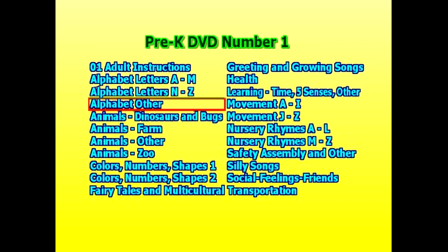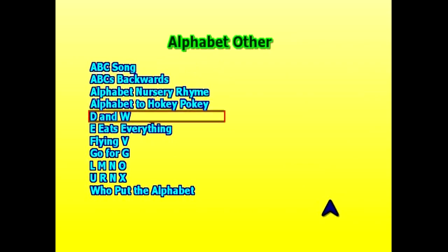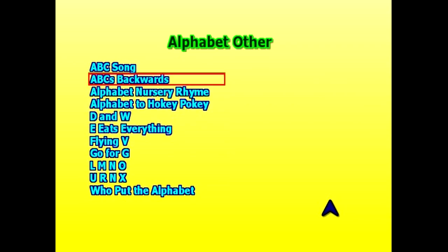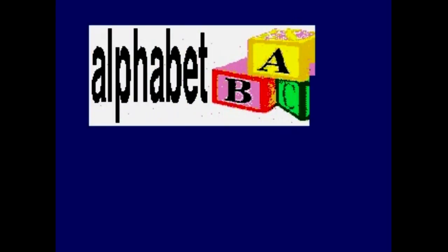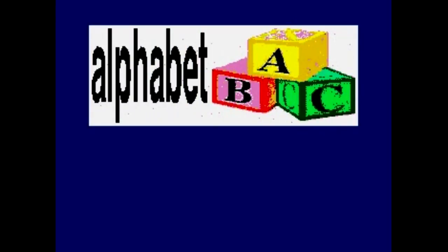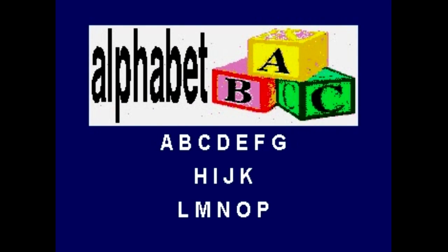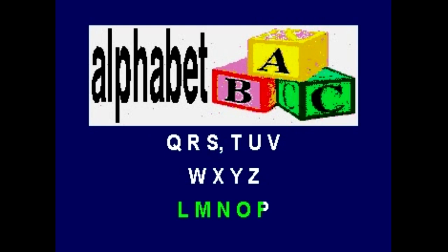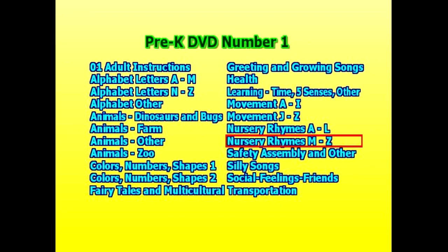Alphabet Other is another folder — if you click on it you'll see those songs. You can click on any one of the songs and the song will begin to play. For instance, the alphabet to the Hokey Pokey. Click on it and that song will play. All these songs do have scrolling lyrics. Click on your menu button on your remote and it will take you back to the main screen.